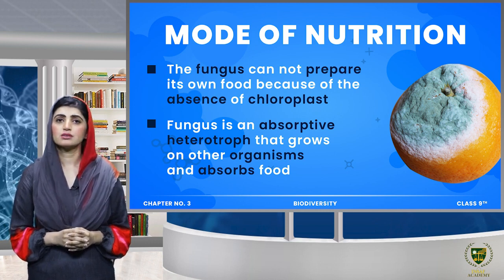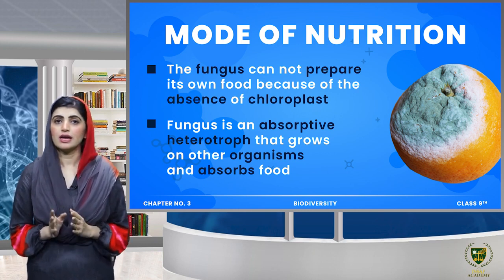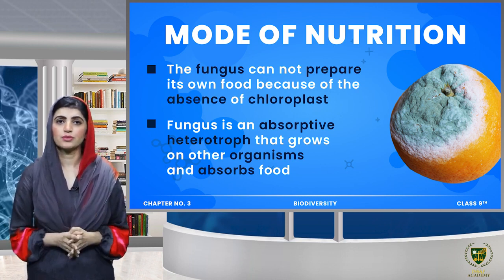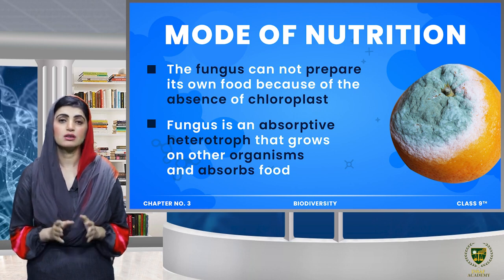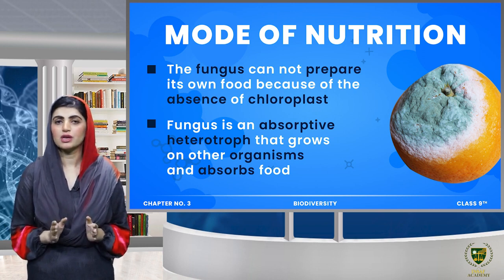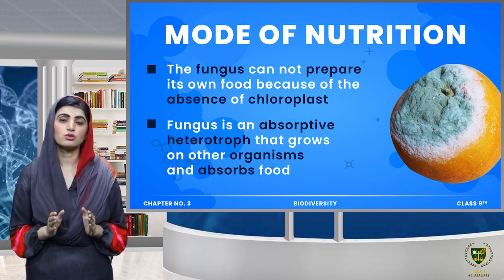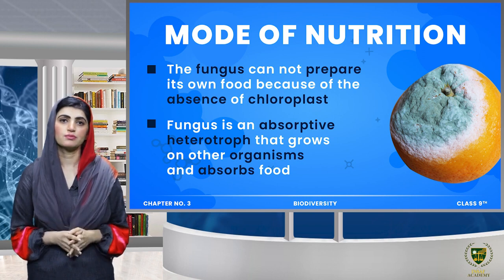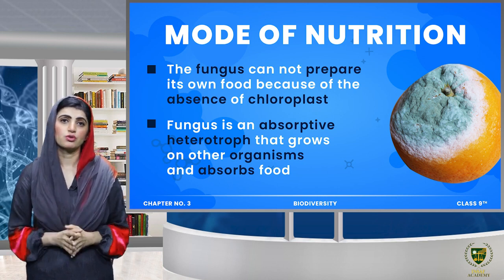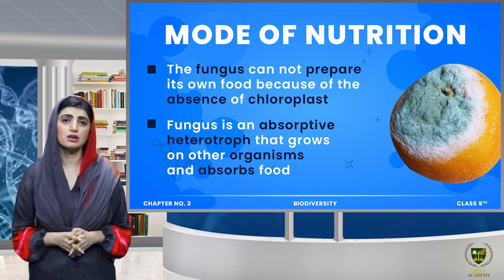If we talk about fungus's mode of nutrition — whether it is autotrophic or heterotrophic — fungus cannot prepare its own food at all, because fungal cells do not have chloroplasts and fungus cannot prepare food through photosynthesis. Fungus is a heterotroph — specifically a different type called an absorptive heterotroph.